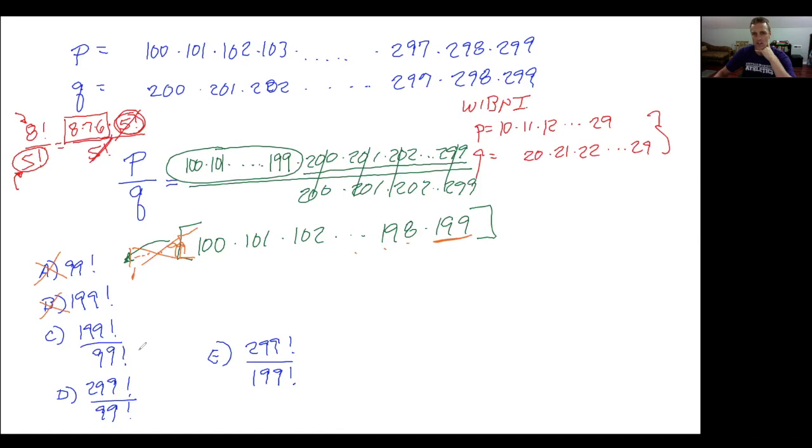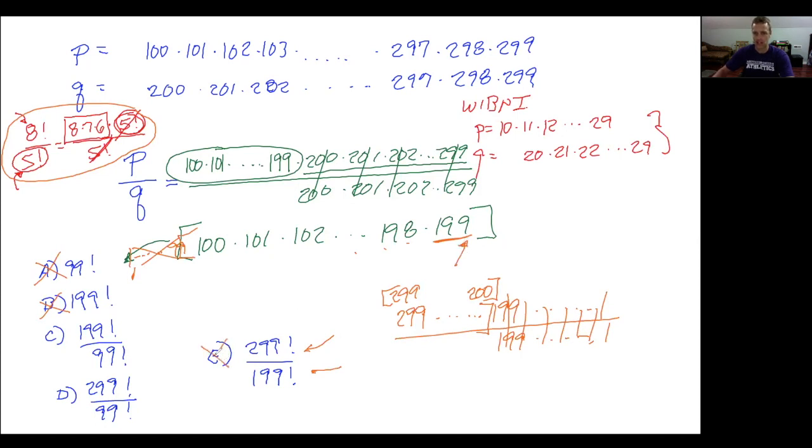Now, how about some of these other ones? Why are they dividing out stuff? Well, that's because of what I just showed you. Answer choice E, for example—that's 299 down to 1, and then the 199 all the way down to 1 is in the denominator, so all that stuff cancels. We're left with 200 up to 299, but that's too big. We don't want that; we only go up to 199, so it's not E.